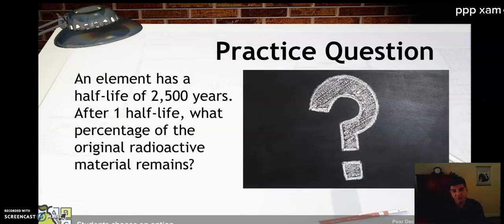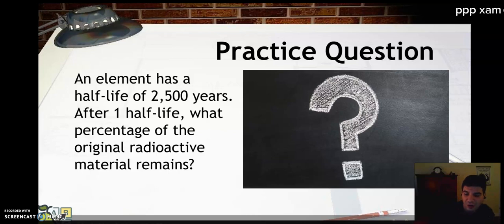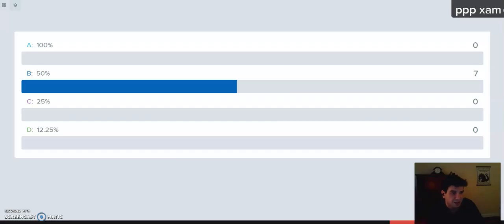So I have a question for you. The element has a half-life of 2,500 years. After one half-life, keyword is half-life. What percent of the original radioactive material will remain? Last chance for this. An element has a half-life of 2,500 years. After one half-life, what percentage of the original radioactive material will remain? And yeah, exactly 50%. 50%. So your answer should have been half.